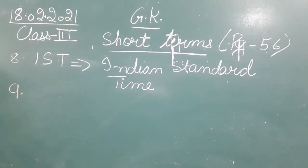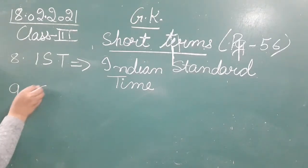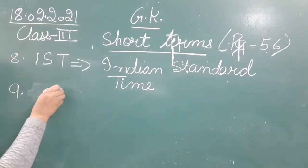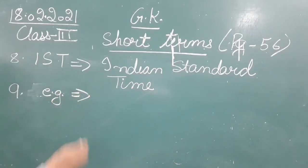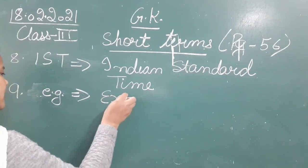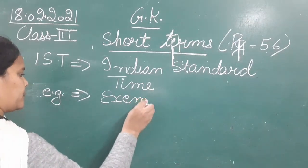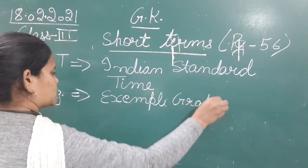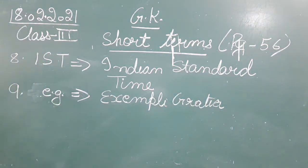The ninth is EG. We use EG — written as small e and small g with a dot — while giving examples. The full form of EG is 'Exempli Gratia'. We use this short form whenever we want to give an example.